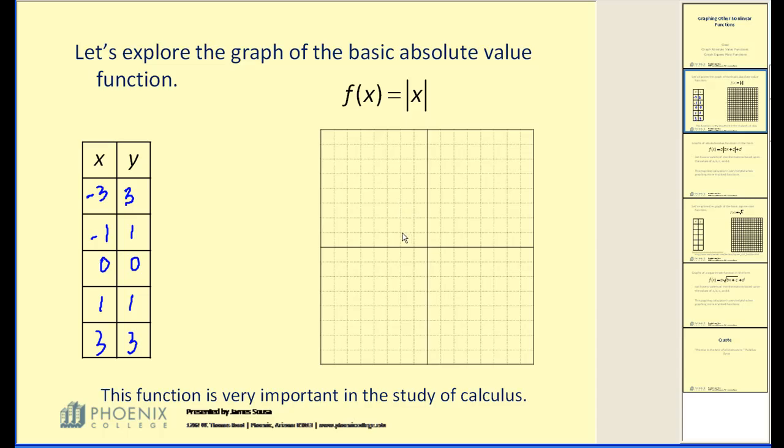Let's go ahead and graph these five points: negative three, three; negative one, positive one; zero, zero; one, one; and three, three.